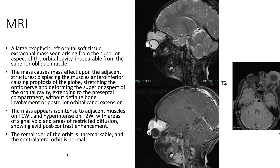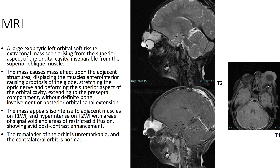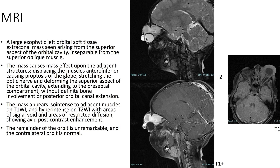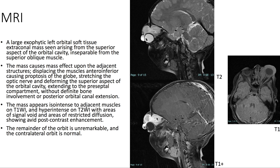On MRI, we see a large exophytic left orbital soft tissue extraconal mass arising from the superior aspect of the orbital cavity. The lesion is seen to cause mass effects on adjacent structures. On T1, it is iso-intense to adjacent muscles. On T2, it is hyper-intense, and on T1 with contrast, we see avid post-contrast enhancement.